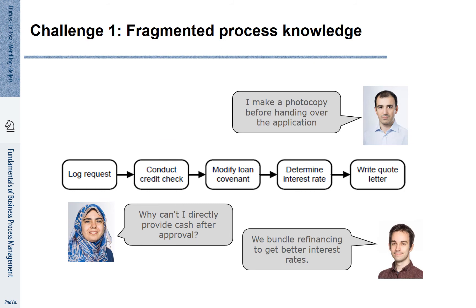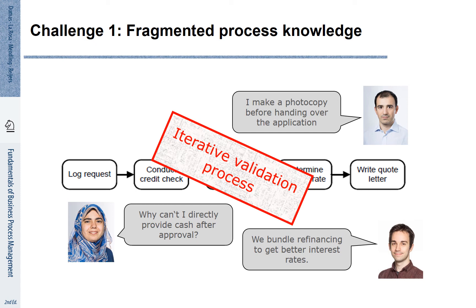What are the challenges in coming up with an accurate process model? Consider a loan request process. Usually, with business processes, there are different persons involved, each responsible for different tasks. Each process participant has a fragmented view of the process. For example, the person responsible for conducting a credit check may not know what is happening later in the back-office handling of that loan. Process discovery is about putting these fragmented pieces of knowledge together. We need to iteratively validate the process to make sure that these fragmented pieces actually fit together.